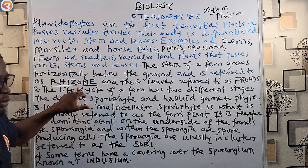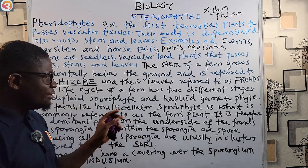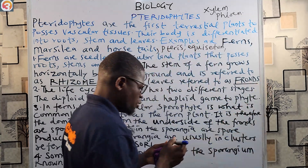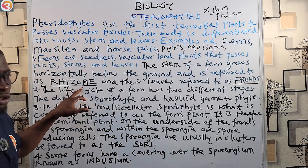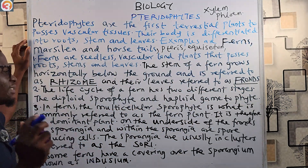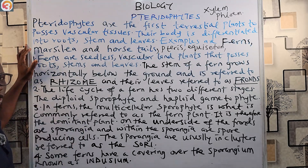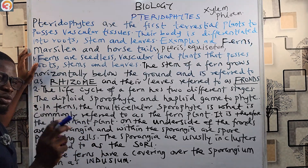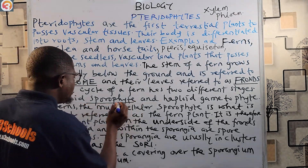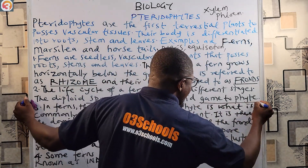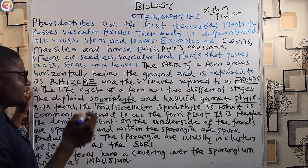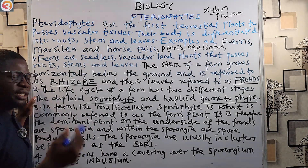The stem of a fern is called the rhizome, and the leaves of a fern are called the fronds - F-R-O-N-D-S. The life cycle of a fern has two different stages: the diploid sporophyte and the haploid gametophyte. This means ferns undergo alternation of generation.